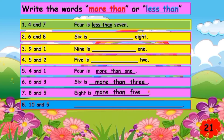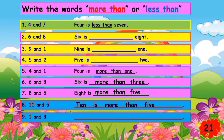Next, number eight: ten and five. Is it more than or less than? That's right, it is more than. Write the complete sentence: spell ten — T-E-N — and then 'is more than' and five. So: ten is more than five.